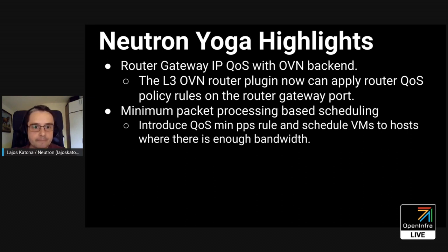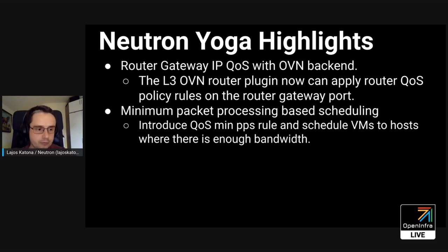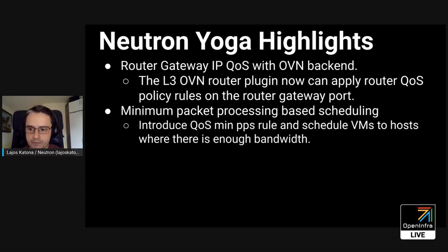Another OVN feature that we already had in the previous release is the Router Gateway QoS. But now you can use that feature and API with OVN also. We have a list of gaps between OVN and OVS deployments, and this was one of those items on the gap list. Now we have removed a few things from this gap list, so you can use OVN for more use cases.